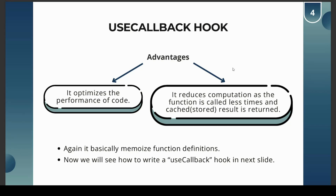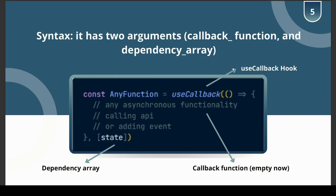The syntax of useCallback takes two arguments: a callback function (the function we want to store) and a dependency array, just like useEffect. You can treat it as a function containing an arrow function or function expression, along with a dependency array. When the dependency array contains a state that can change, if the state is not changed, the function definition persists; if it changes, the function definition will also change across re-renders.